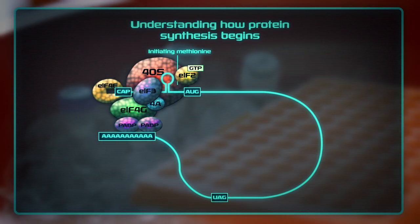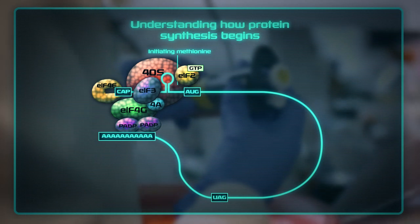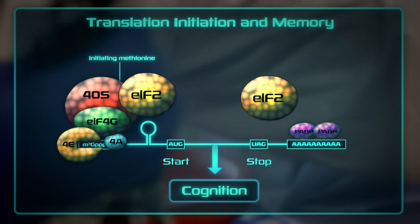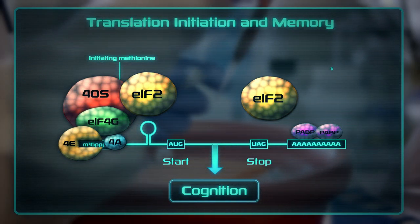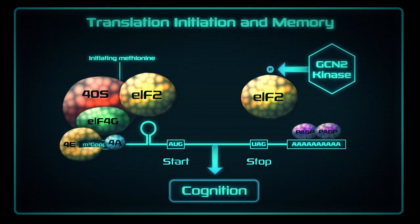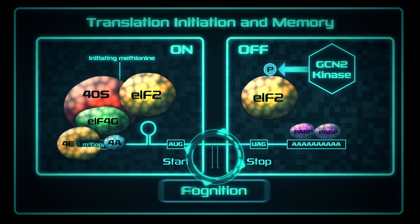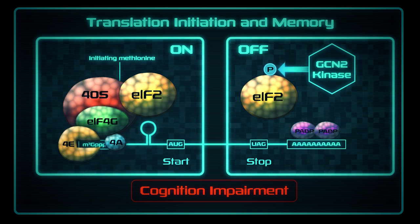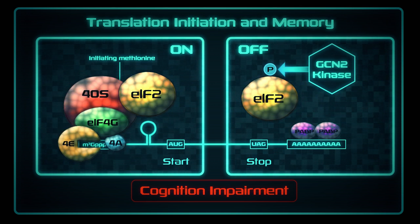These important proteins recruit the amino acid methionine with which protein synthesis starts. When EIF2 is modified through adding a phosphate group by a protein kinase called GCN2, general protein synthesis is significantly reduced. Remarkably, when we reduced the ability of mice to fully phosphorylate EIF2, the animals showed a significant increase in their spatial memory. Therefore, we explored the possibility of targeting the phosphorylation of EIF2 as a means to improve memory.